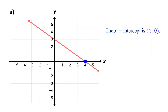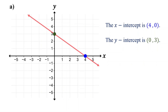First, locate where the line crosses the y-axis, then identify the coordinates of this point. The x-value at the y-intercept is 0. The y-value is 3. Therefore, the y-intercept is the point (0, 3). Try this one — find the x- and y-intercepts.